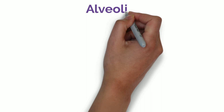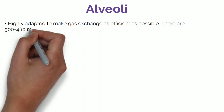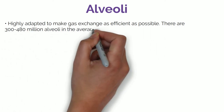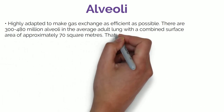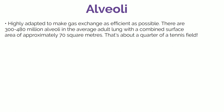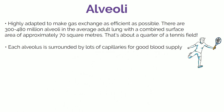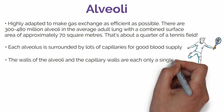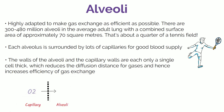Alveoli are key players in gas exchange and are highly adapted to make gas exchange as efficient as possible. There are 300 to 480 million alveoli in the average adult lung, with a combined surface area of approximately 70 square meters. Each alveolus is surrounded by lots of capillaries for good blood supply. The walls of the alveoli and the capillary walls are each only a cell thick, which reduces the diffusion distance for gases and increases the efficiency of gas exchange.